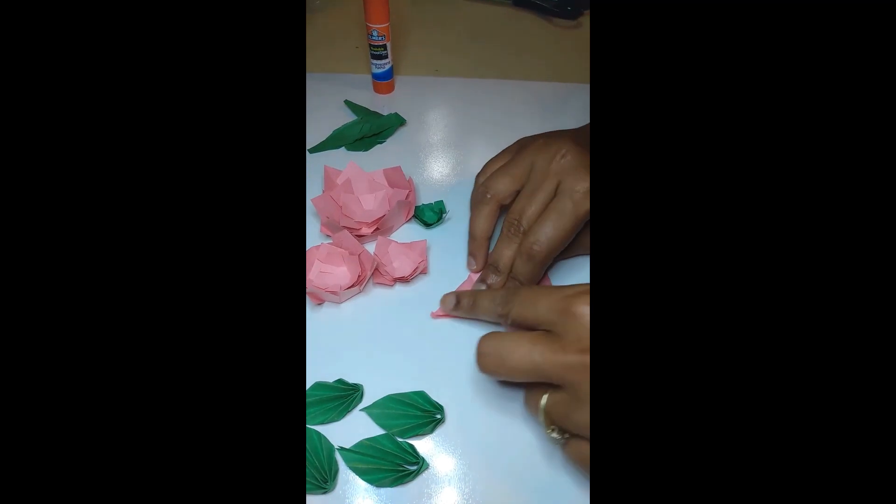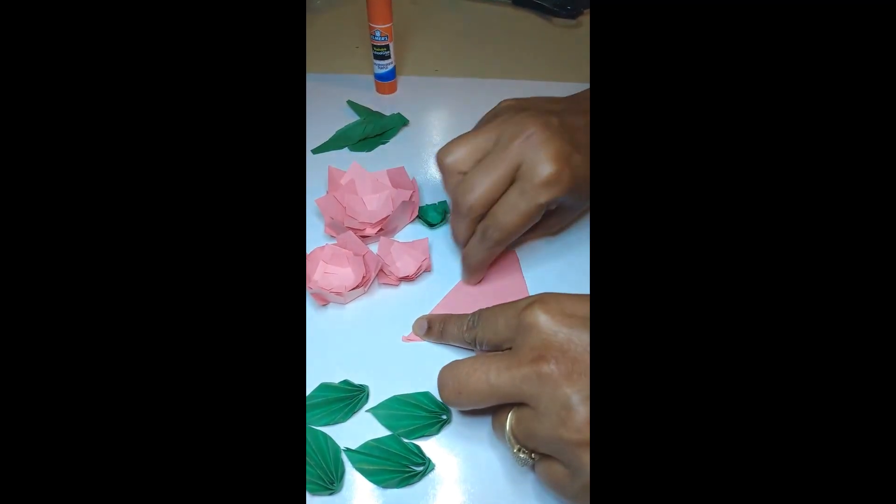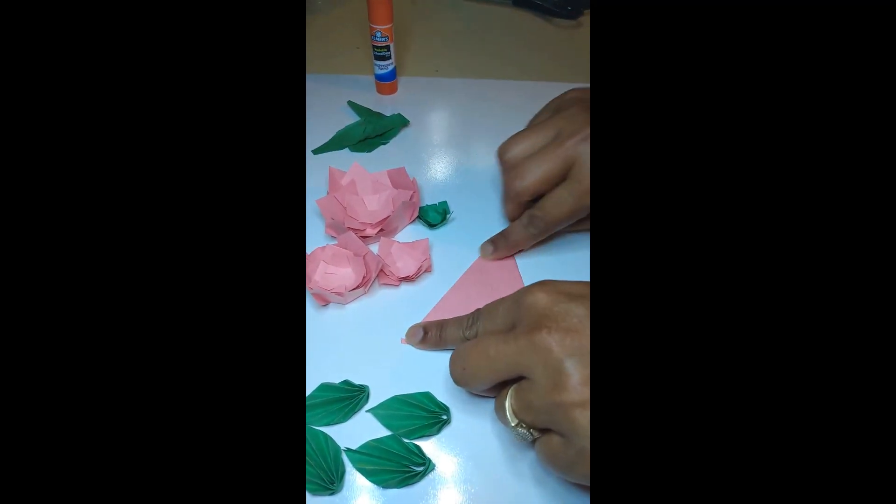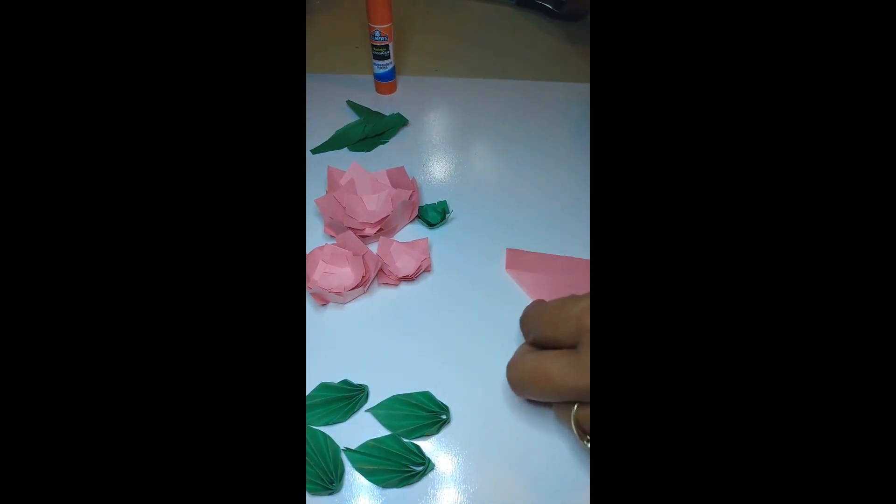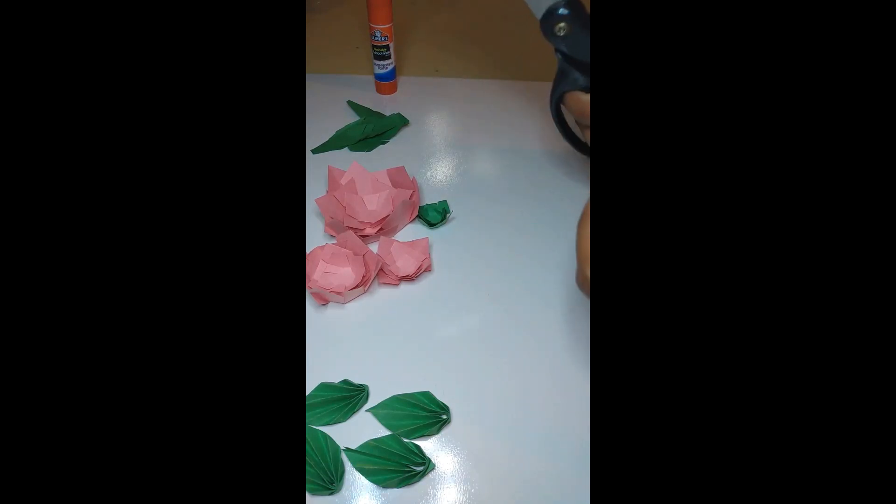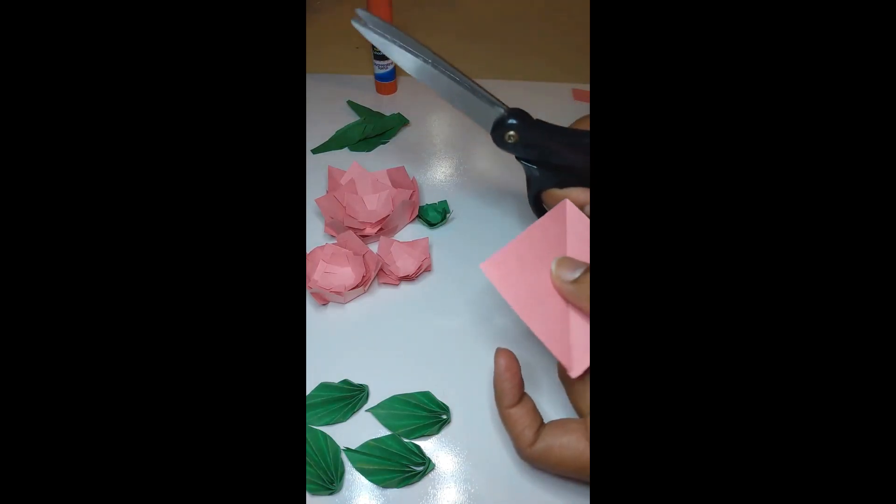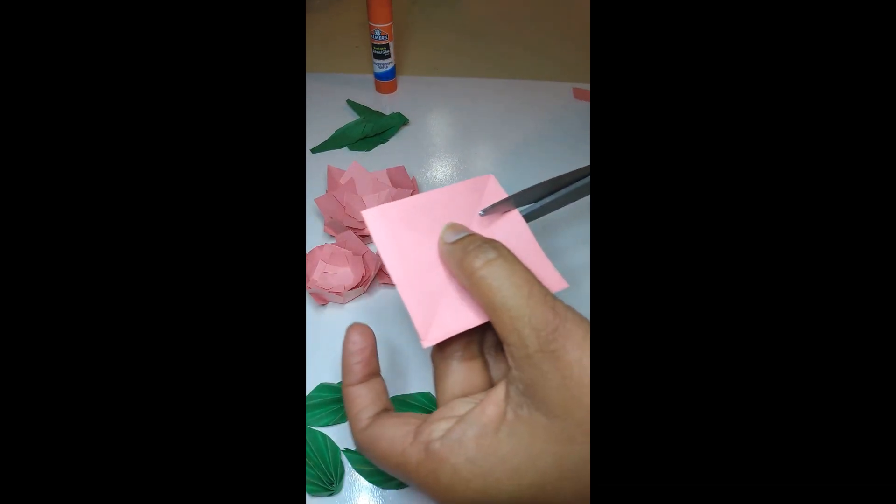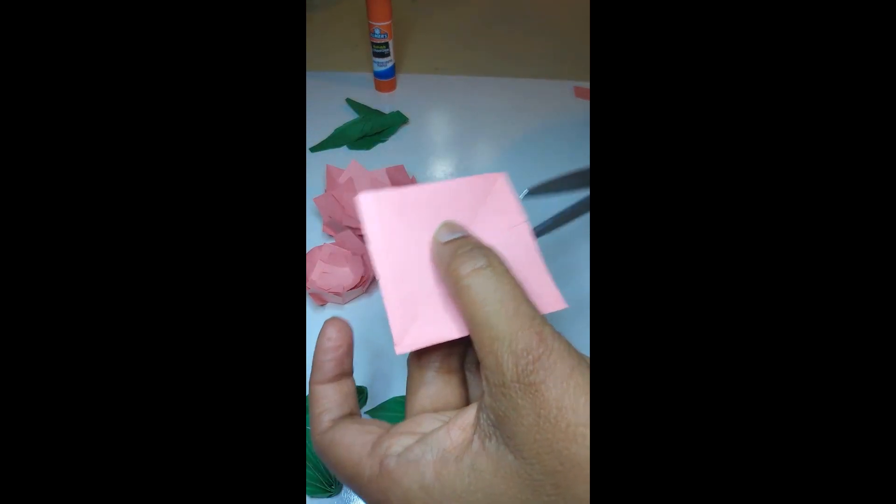Now start making flower. Here I took pink color paper, then fold it in a triangle shape and cut the edges. Now you will get a square shape. Cut the edges like this.